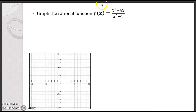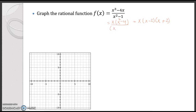Let's go ahead and go over one more problem. This function f of x has a numerator that factors into x times (x squared minus 4), which factors even more into x times (x - 2) times (x + 2). The denominator factors into (x + 1) times (x - 1).